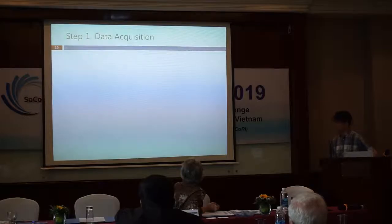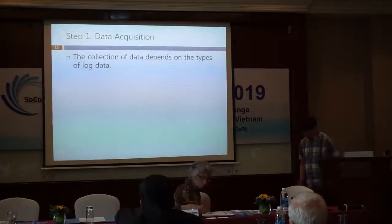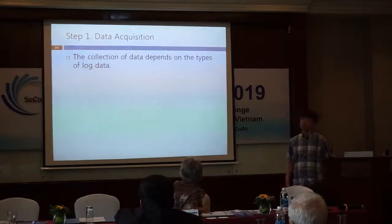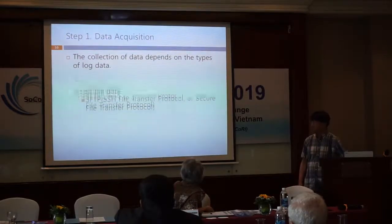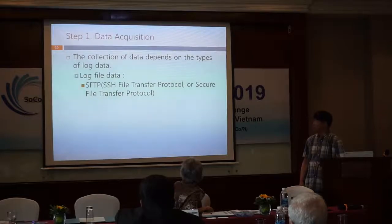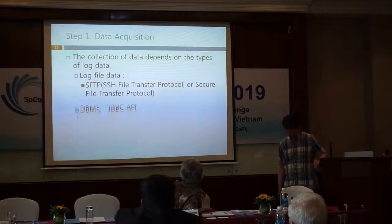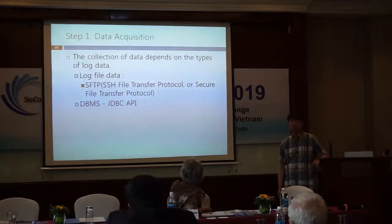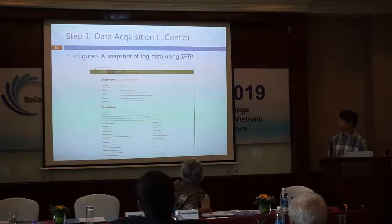Let's start with step one: data acquisition. The collection of data depends on the type of raw data. In case of file data, Secure File Transfer Protocol is used. In case of DBMs, we use JDBC API. This shows the acquisition of raw data using SFTP.